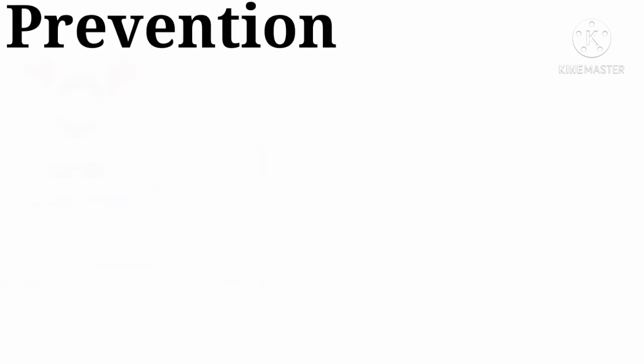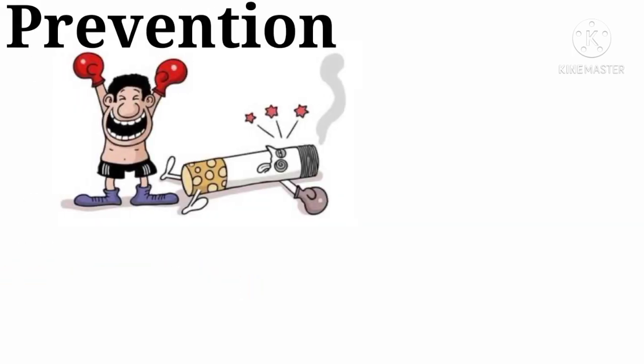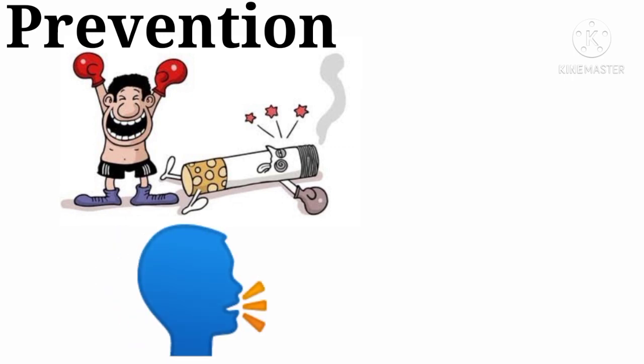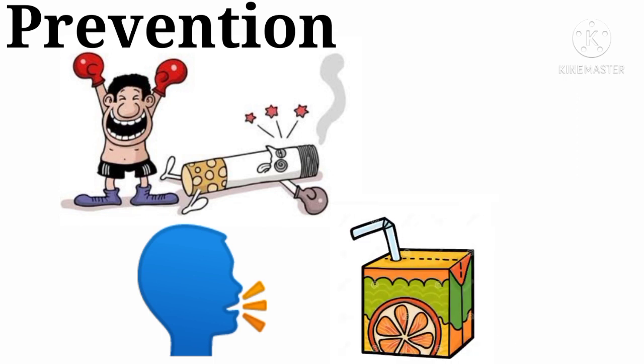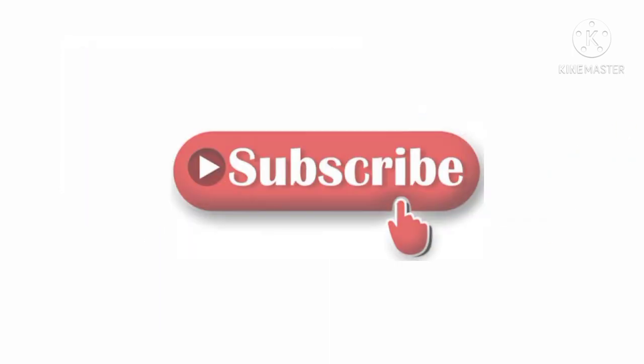Dry socket can be prevented by no smoking before and after tooth extraction, no spitting or vigorous rinsing of the affected side, avoiding use of straws or drinks for at least 24 hours, and maintaining good oral hygiene.